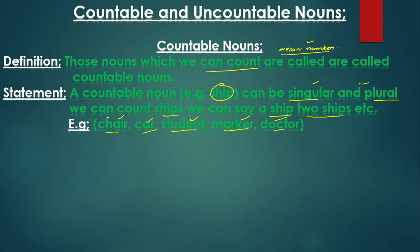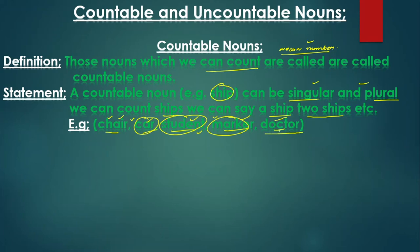For example: we have 35 chairs in the class, he has 75 cars in his showroom, I have 100 students in the academy, I have 4 markers with me, and there are 35 doctors in the civil hospital. We can count them all — we can give them a number. That is a countable noun.